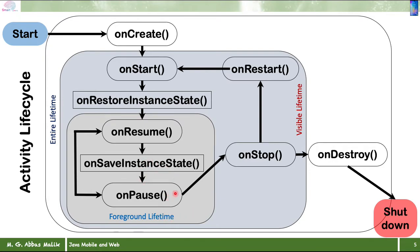Once it gets back focus, it will call onResume and become visible to the user. But once it is completely invisible, it will call onStop, onRestart, and onStart. When onStart is called again it becomes visible, then onResume is called and the user can interact with it. If the activity is no longer required, or due to limited memory the Android system wants to destroy it, it will call onDestroy — more like a destructor — and the activity is no longer available in memory.